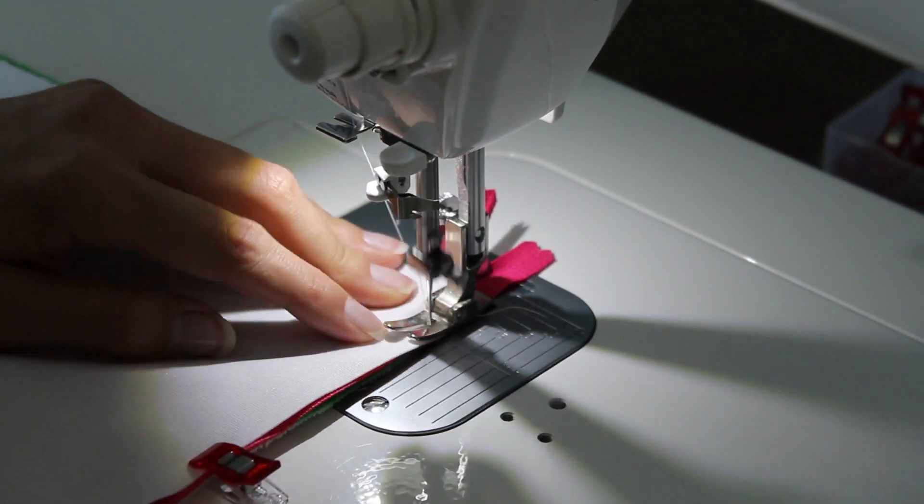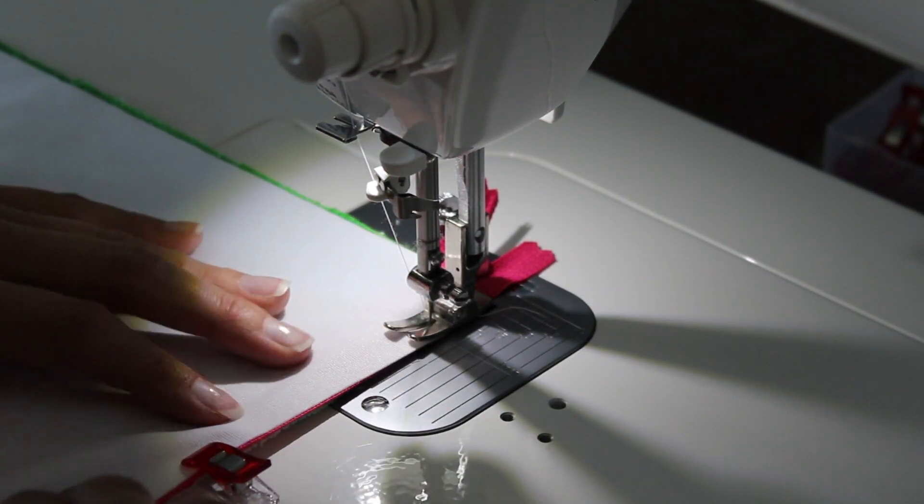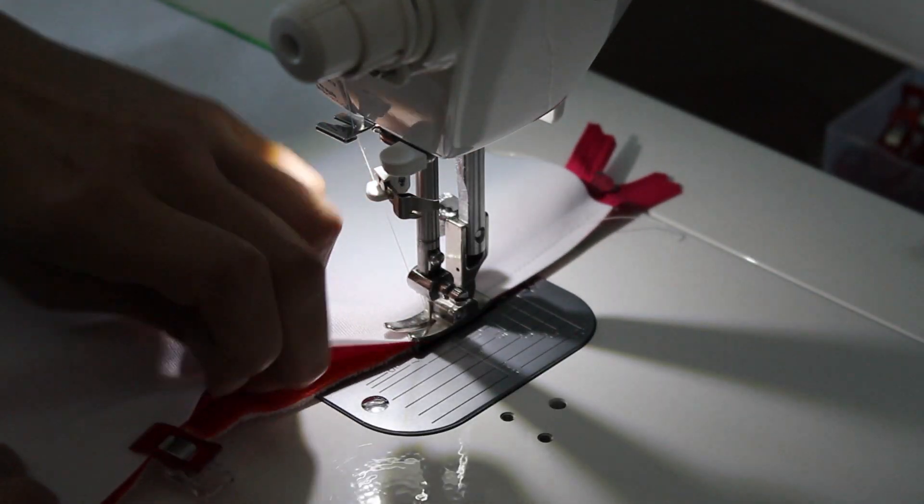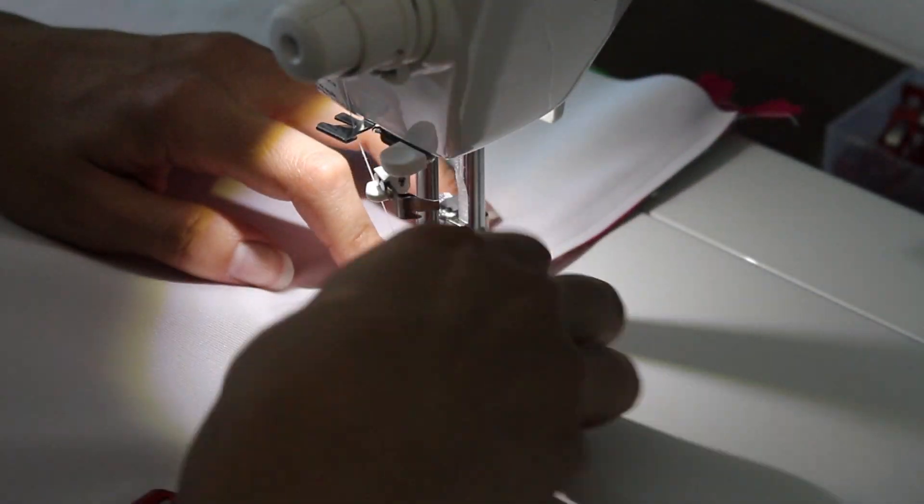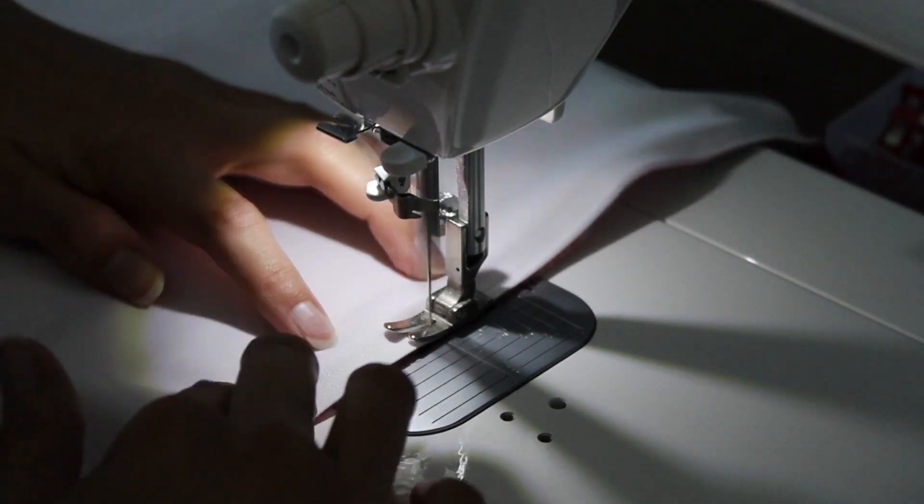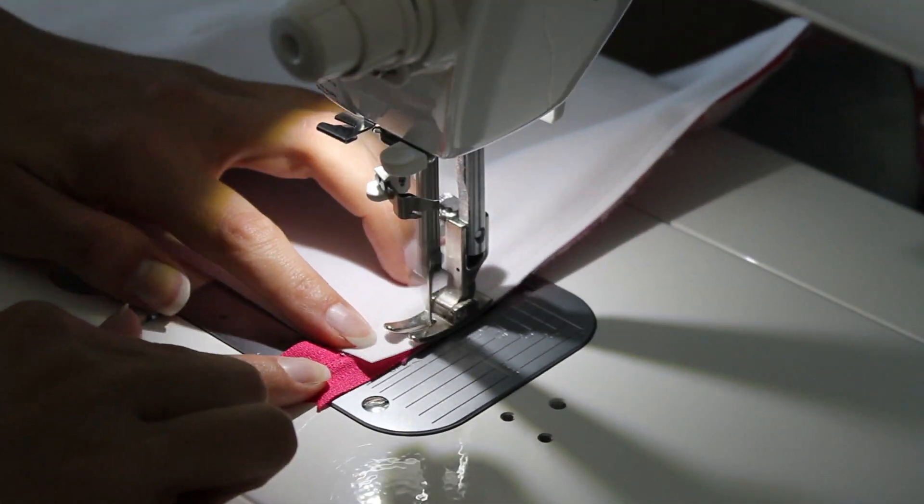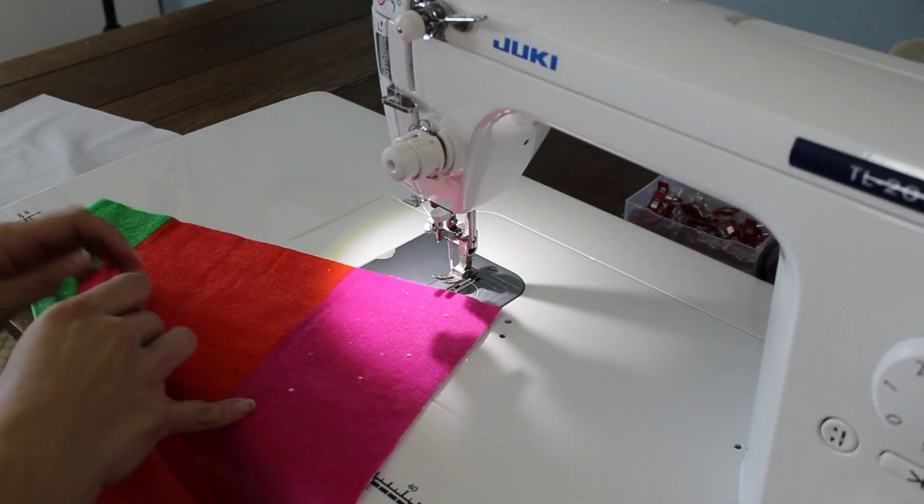So then head over to your sewing machine. And I'm just using the regular foot on my sewing machine. And you're going to start sewing down the zipper. You can use a zipper foot. That's fine. Make sure all of your layers are lined up together. And sew down. It's okay if your PUL fabric kind of shifts a little bit. We can adjust that at the end.